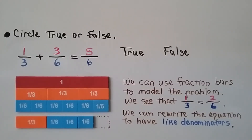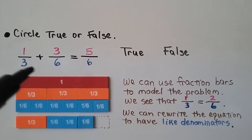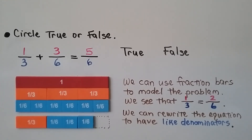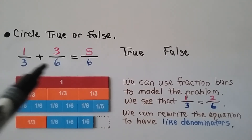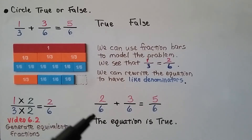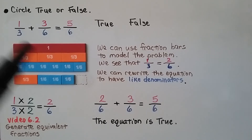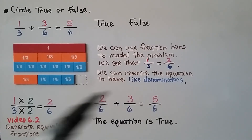We need to circle true or false. The equation says one-third plus three-sixths equals five-sixths. First, notice that the denominators are not the same for the addends. We can use fraction bars to model the problem — we can see that one-third is equal to two-sixths. We can rewrite the equation to have like denominators and then add them. Two one-sixth parts equals one-third, so we write two-sixths for that addend and slide the six across, then add the numerators: two plus three equals five.